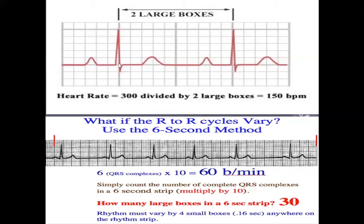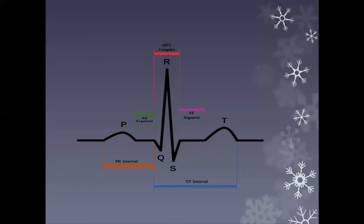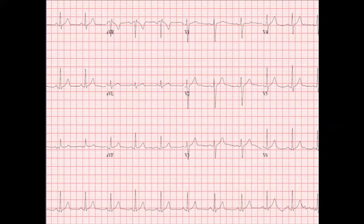If the rhythm is irregular, you simply count the number of QRS complexes in 30 large squares — which equals 10 seconds — then multiply by 10. That gives you the heart rate. After checking the rate, you check the rhythm — commenting on whether it is regular or irregular. After checking rhythm, you check the axis — either right axis or left axis deviation.